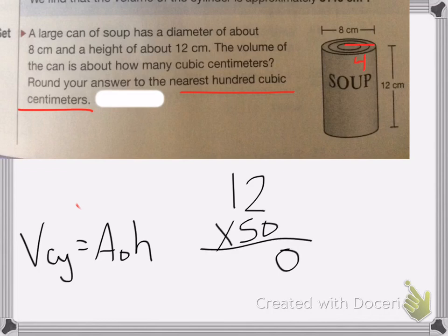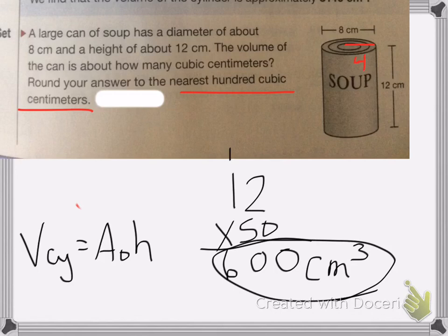5 times 2 is 10, carry the 1. 5 times 1 is 5, plus 1 is 6. So my volume is 600 centimeters cubed. And that's all. Good luck on your homework.